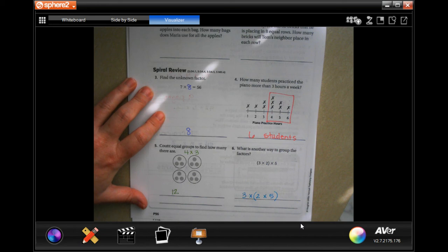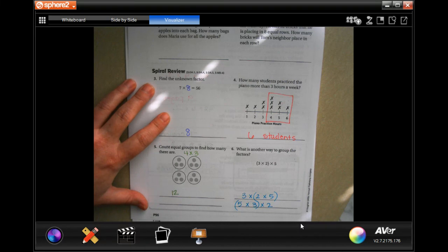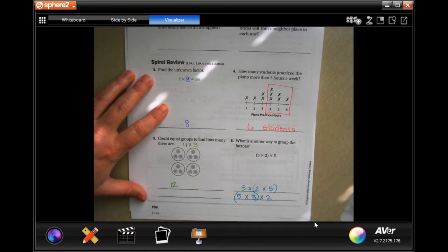We could move them around and say 5 times 3 times 2, and we can do that either way. You can move the two to the front of the line as long as you have the same numbers and you're good to go.